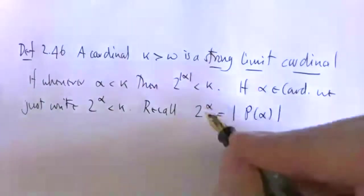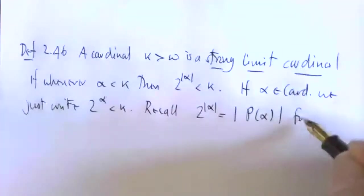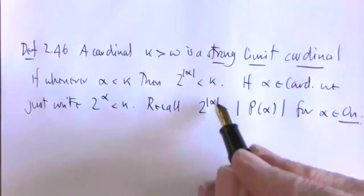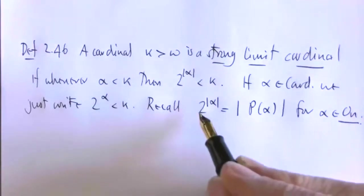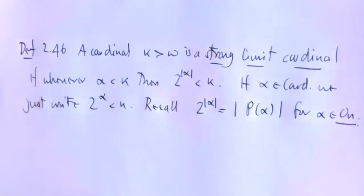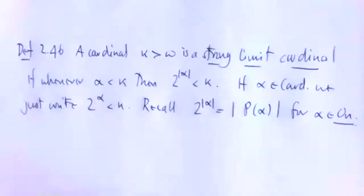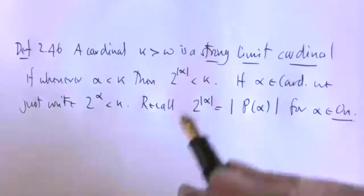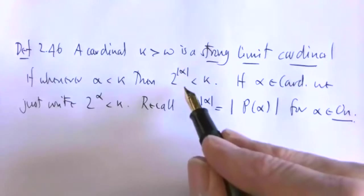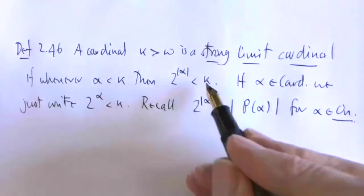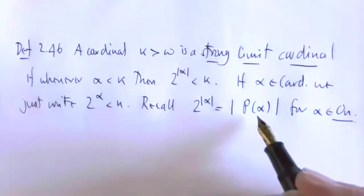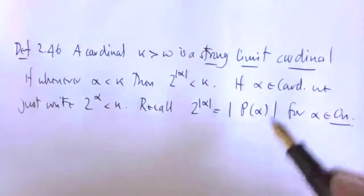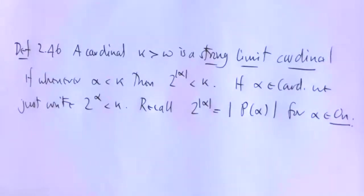This is the cardinality of the power set of alpha. Here, if alpha is an ordinal, 2 to the alpha is defined to be the cardinality of the set of functions from alpha into 2, which we identify with characteristic functions of subsets of alpha. So a strong limit cardinal is one where, for any cardinal alpha less than kappa, its power set has size less than kappa — you can't access kappa using the power set operation.